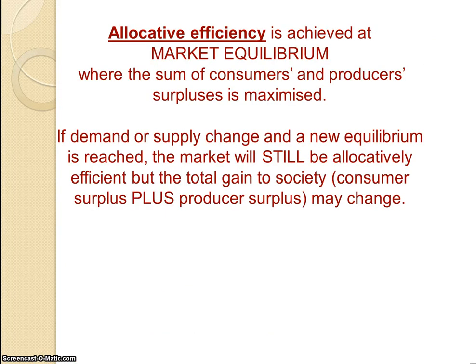From that we have this idea of allocative efficiency. Allocative efficiency is always achieved at market equilibrium, because that is where consumer and producer surplus are maximized. The gain to society is at its highest level at equilibrium. If we try any other price-quantity combination, we'll lose some consumer or producer surplus, and that won't maximize the benefit for society.